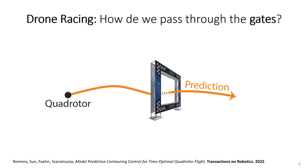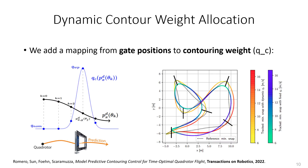So for the application of drone racing, how do we pass through the gates? How do we use the model predictive contouring controller such that the platform always passes through the gates? We add a dynamic contour weight such that at every gate we give more importance to passing close to the path than to going fast. For this, we add a Gaussian function at every gate such that the importance of the contour error is maximum at the center of the gate, creating a region of attraction around every gate. In the plot on the right, we show two different flights on the same track: one with the dynamic allocation (red) and another without (blue). Notice how the blue one does not pass through the majority of the gates, while the red one does.